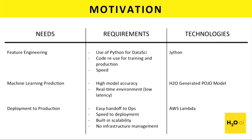I broke the motivation up into three pieces: needs, requirements, and technologies. Starting with needs: the customer had data but needed to do feature engineering — build features in order to get the right signal from the model. But he didn't just want to stop there. He wanted to reuse that feature engineering in production. This is a really common thing to want to do: you're building features in training and you want to apply those same feature transformations in production.